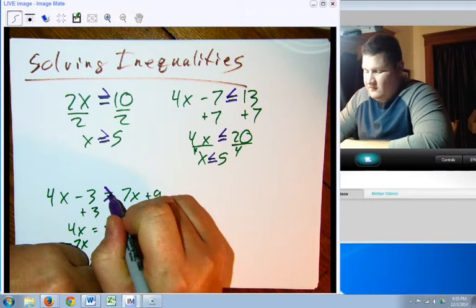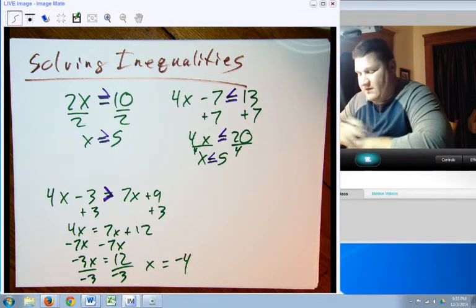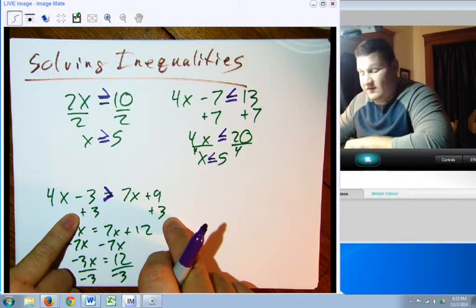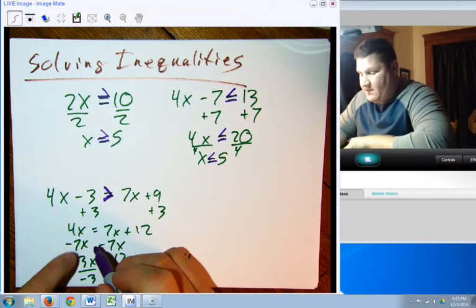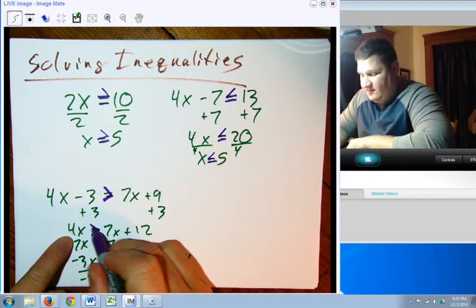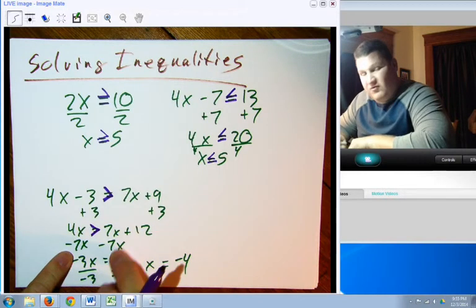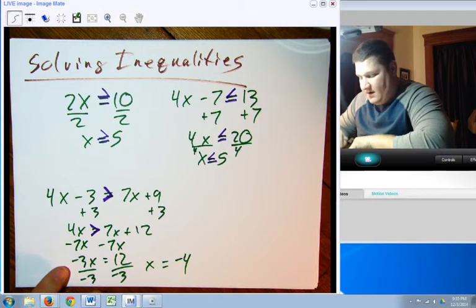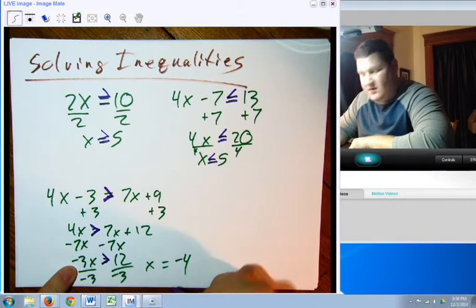And instead of using equal to, let's just use greater than. If 4x minus 3 is greater than 7x plus 9, I'm going to add 3 to both sides. I can add or subtract things from both sides, and it doesn't make a bit of difference, just like it did up here. And so I still have 4x is greater than 7x plus 12.